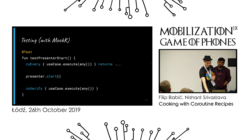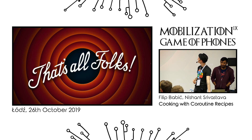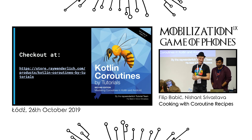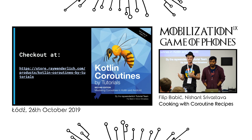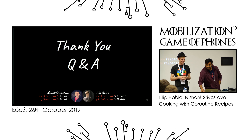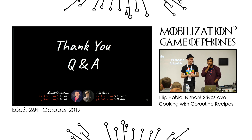You can say coEvery so every time a suspend function is called, return something, or coVerify that some dependency was called. With all this, we finish up our coroutine recipes. We wrote a book with Ray Wenderlich on Kotlin coroutines covering general coroutines content, Android application examples, and more. If you have any questions or more recipes to share, please reach out to us.